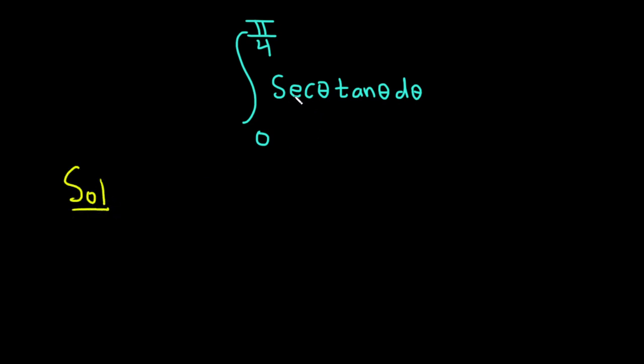Solution. We're looking for a function whose derivative is secant tangent because we're integrating, we're going backwards. Well, the derivative of secant is secant tangent. So when you integrate secant tangent you just get secant.